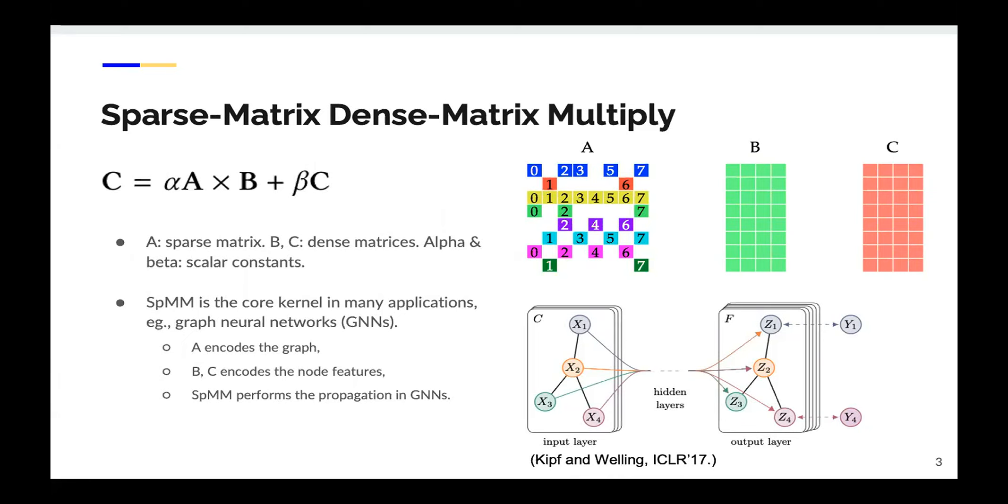The computation of sparse matrix-dense matrix multiplication is defined as C equals alpha A multiplied by B plus beta C. In this equation, A is the sparse matrix, B and C are two dense matrices, alpha and beta are constant scalars. SpMM is the core kernel in many applications. Here, we use graph neural networks to illustrate how SpMM is involved. In graph neural networks, we use A to encode the graphs and B and C encode the node features. If we perform one SpMM, we actually perform the propagation in graph neural networks.